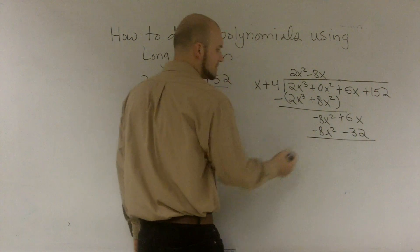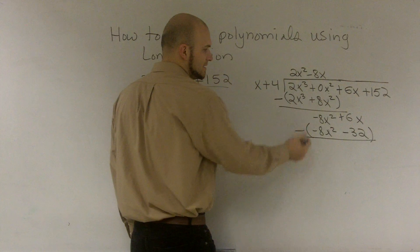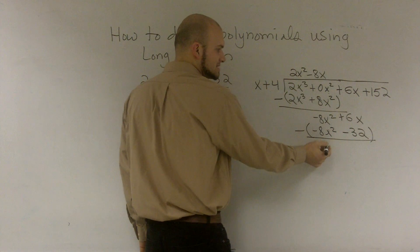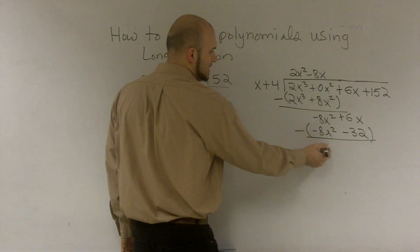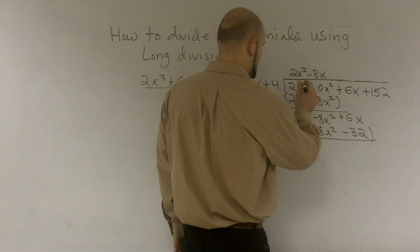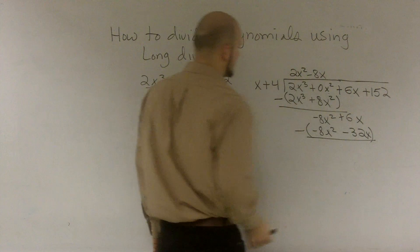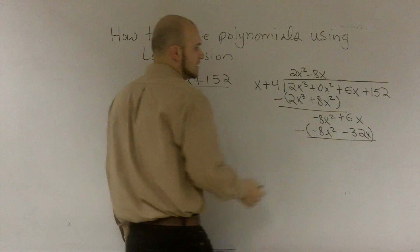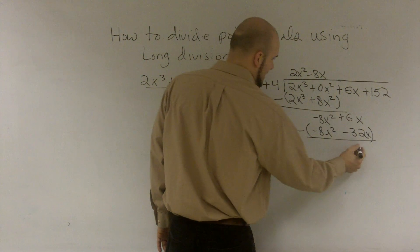So again, now what I'm going to do is I'm going to subtract my whole line. That makes this a positive, so this becomes a 0x squared. This becomes a positive, which is, I'm sorry, this is x, right? 32x. That becomes a positive, so now I'm going to have 38x.